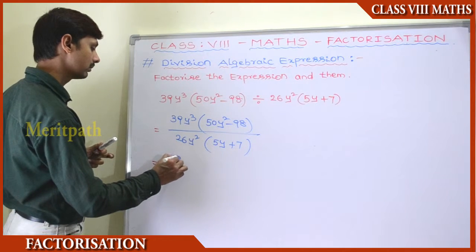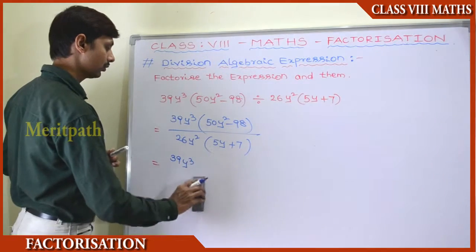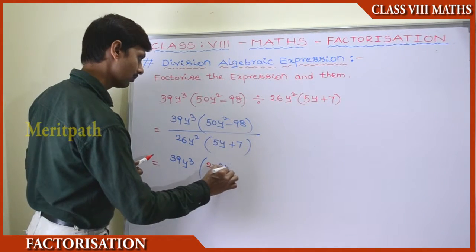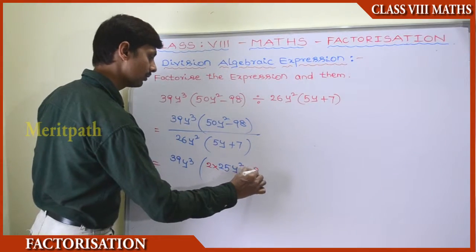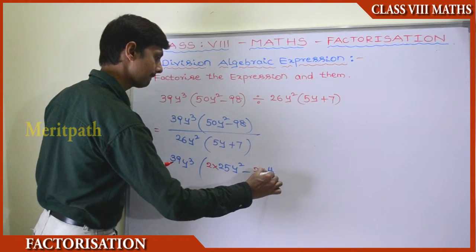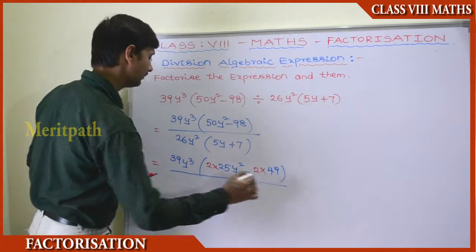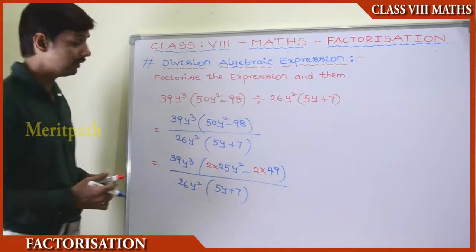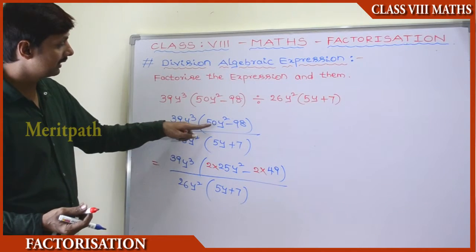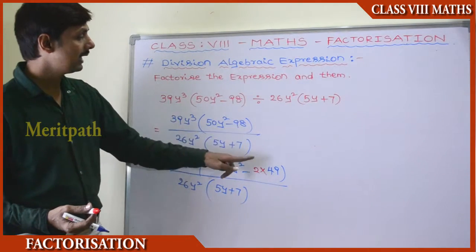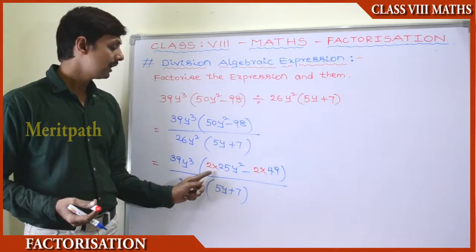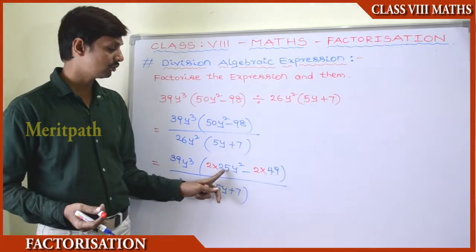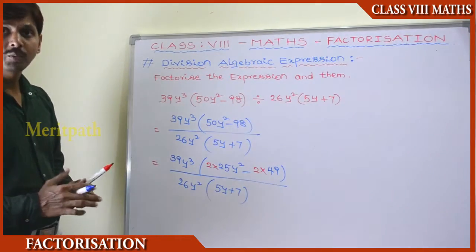So 39y³ into 2(25y² − 49), divided by 26y²(5y + 7). Here 50 can be written as 2 × 25, and 98 can be written as 2 × 49. There is a common factor of 2 in both terms, so using the distributive property we can take 2 out as common.